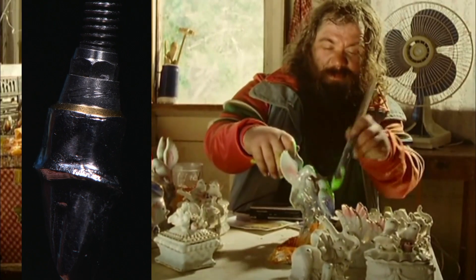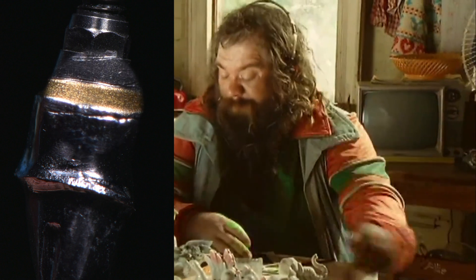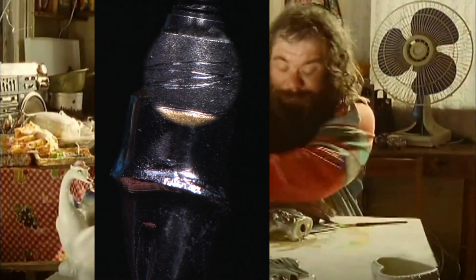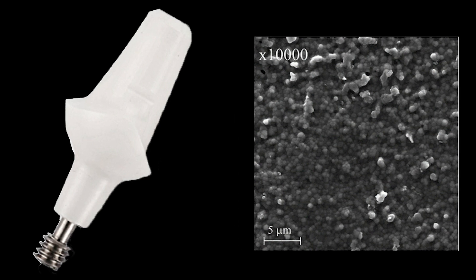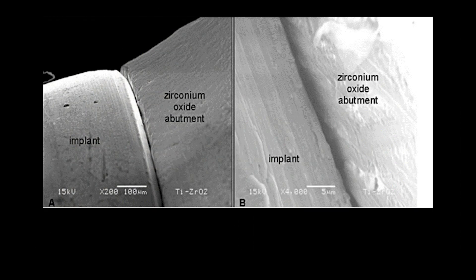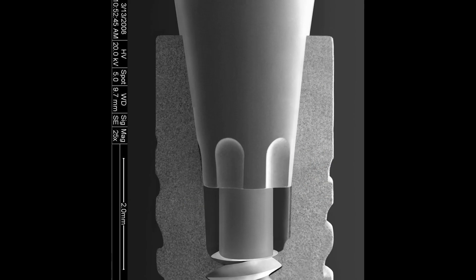A dental technician, no matter how careful he is, can damage the surface of the abutment when working, which will impair the fit. For the same reason, zirconium abutments show poor tightness. The roughness of their surface after milling provides a gap of up to 27 microns, even with a conical joint.